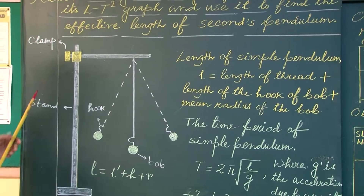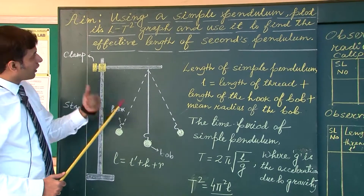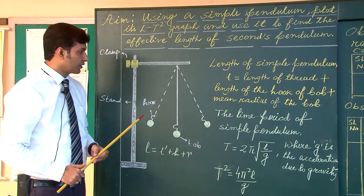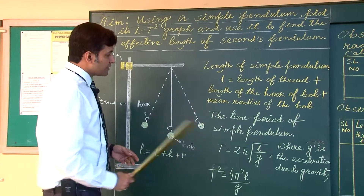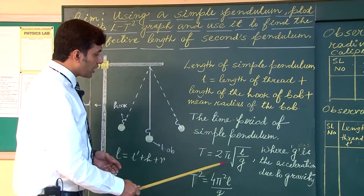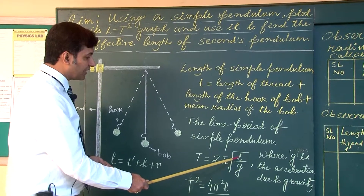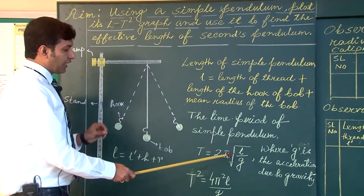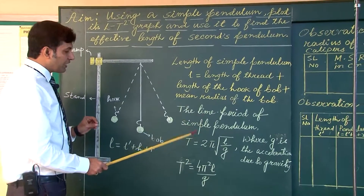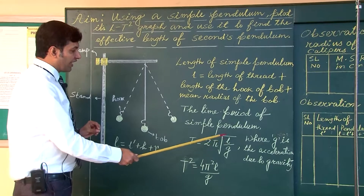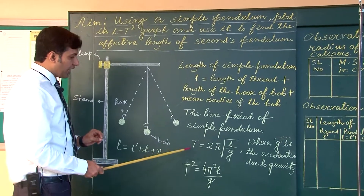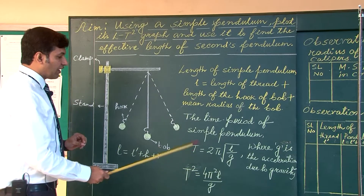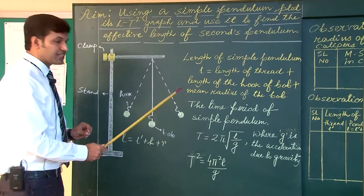We are using a simple pendulum and will be plotting the L versus T square graph to find the effective length of a pendulum whose time period is 2 seconds. The time period of a simple pendulum is T equals 2π root under L by g, where L is the effective length and g is the acceleration due to gravity. We will assume g as 9.8, vary the length, measure the time period for each length, and plot a graph between T square and L.